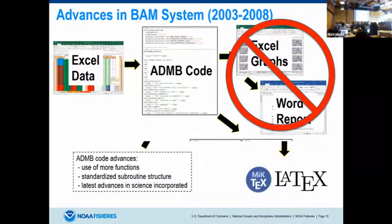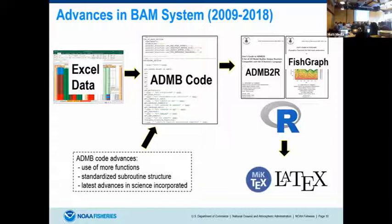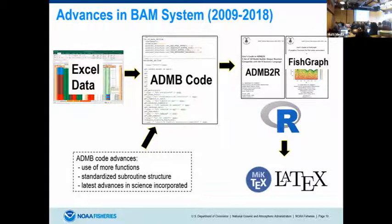Now we had ADMB code, ADMB-to-R code, and FishGraph. The natural next extension was — now that we've got things in R, we can actually start to automate tables and create with TeX code and generate our report. Our goal all along was to get to that push-button assessment — where you push one button, your data runs, you have your model, you're ready to go, and here's your report.